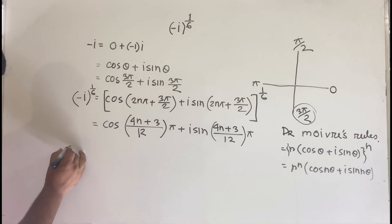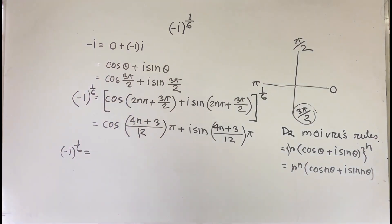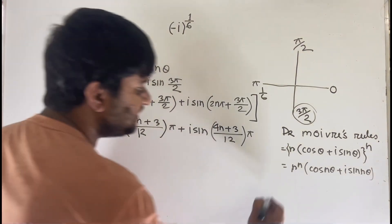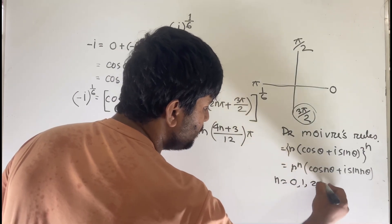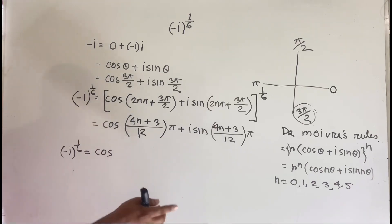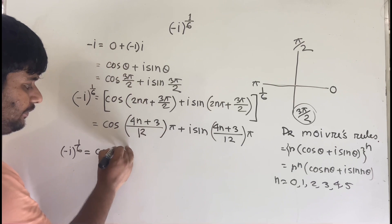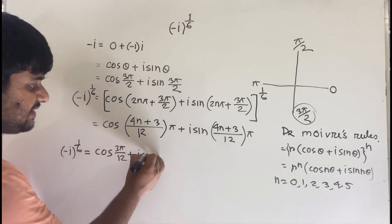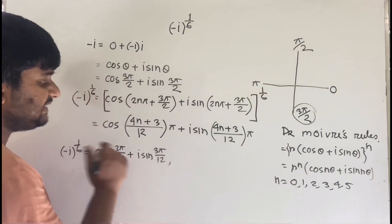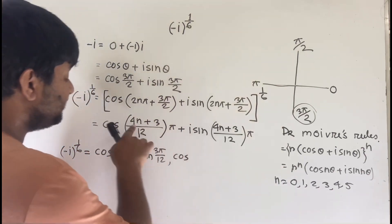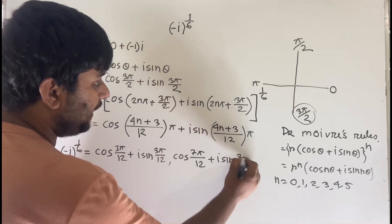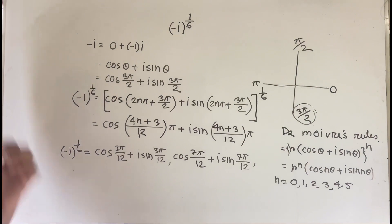So minus i to the power 1 over 6 gives us 6 roots for n = 0, 1, 2, 3, 4, 5. For n = 0: cos(3π/12) + i·sin(3π/12). For n = 1: cos(7π/12) + i·sin(7π/12).